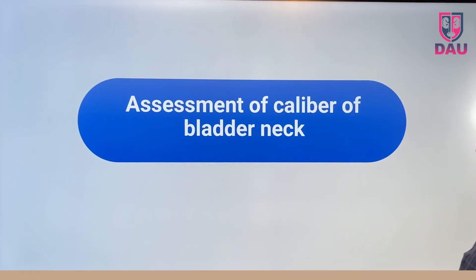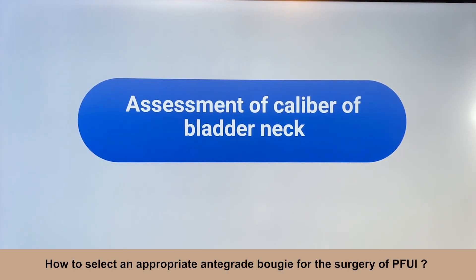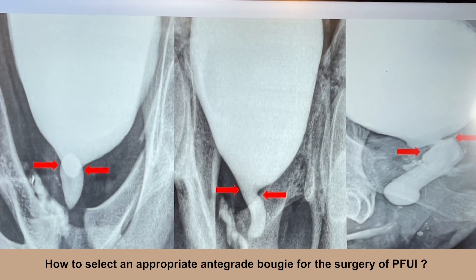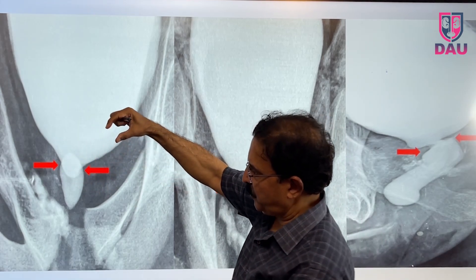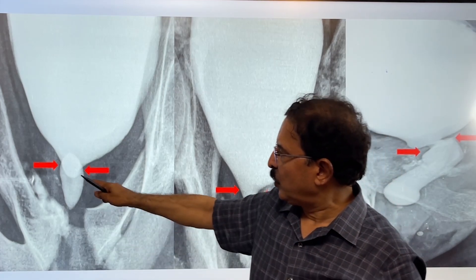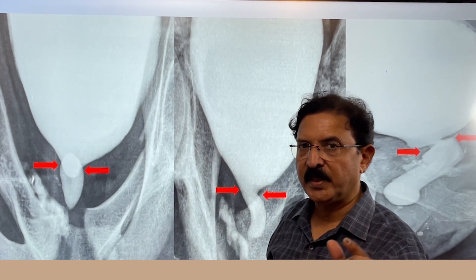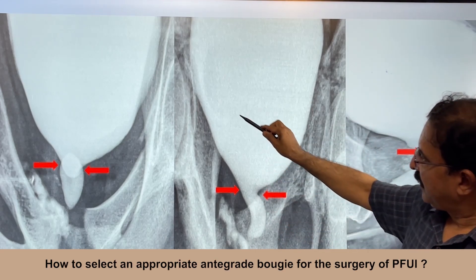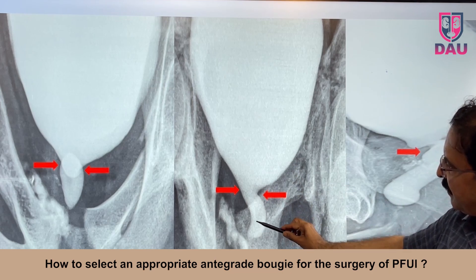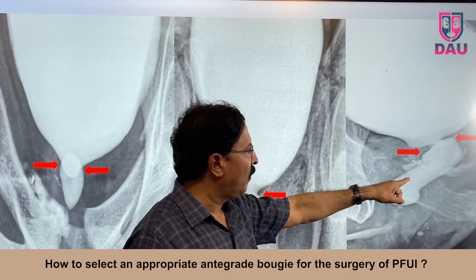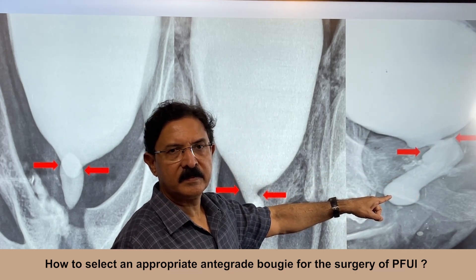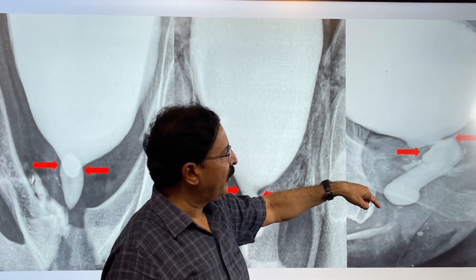So it is very vital to know the site of the SPC. The second point is the caliber of the bladder neck. Looking at pictures of these pelvic fracture injury patients — three examples of MCU — this patient has a narrow bladder neck. The prostatic urethra is superimposed on the bladder, and through a narrow bladder neck, you cannot guide a thick antegrade bougie. This next one has a wide bladder neck — any bougie can enter this easily. And this one has not only a narrower bladder neck but also an abnormal course of the prostatic urethra, making it a tricky situation to guide the antegrade bougie.